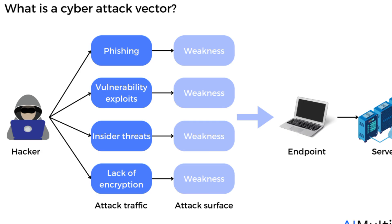Attack vectors are the methods or pathways that cyber criminals use to infiltrate your systems. Phishing emails appear legitimate, often looking like they're from a reputable company, but they contain links that direct you to fake websites, or prompt you to download malicious attachments.